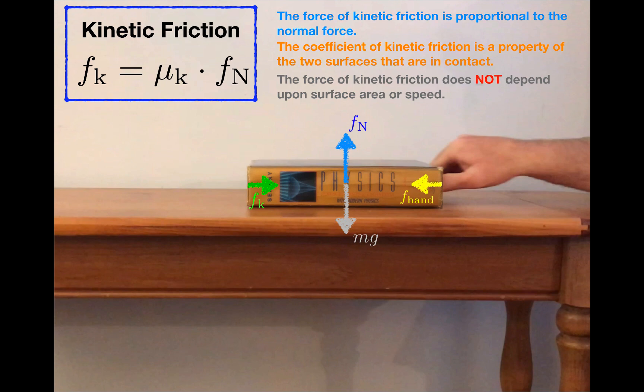The surface area thing is a bit more tricky, but if you can find a box or a block of wood that has exactly the same surface on two sides, try pushing it around, and then rotate it and push it around some more, and you should feel that the frictional force has not changed.